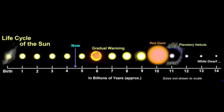The Sun will be fairly stable over the next 5 billion years, at which time it will enter its red giant phase.